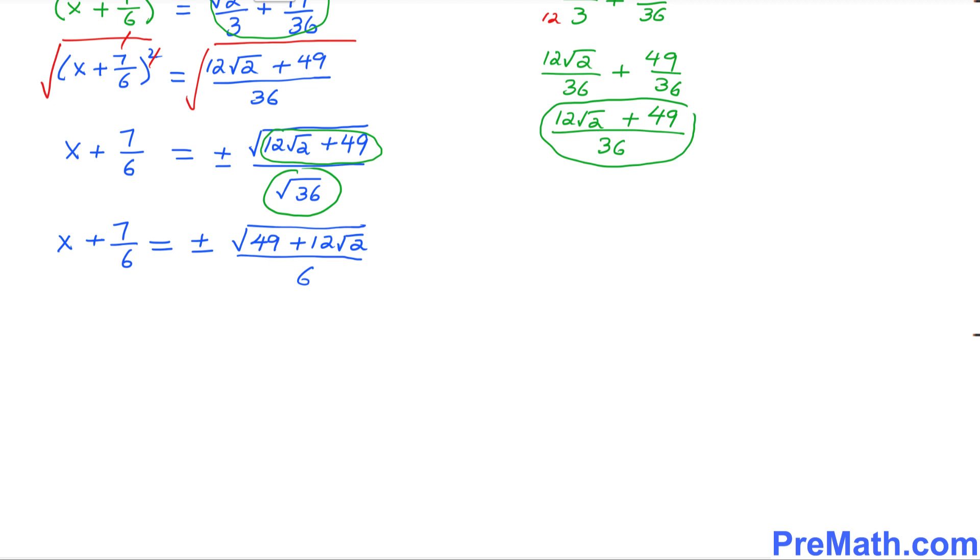Now the final step is we want to isolate x. So I want you to move this fraction on the right-hand side. We simply got x equals -7/6 plus or minus √(49 + 12√2)/6.